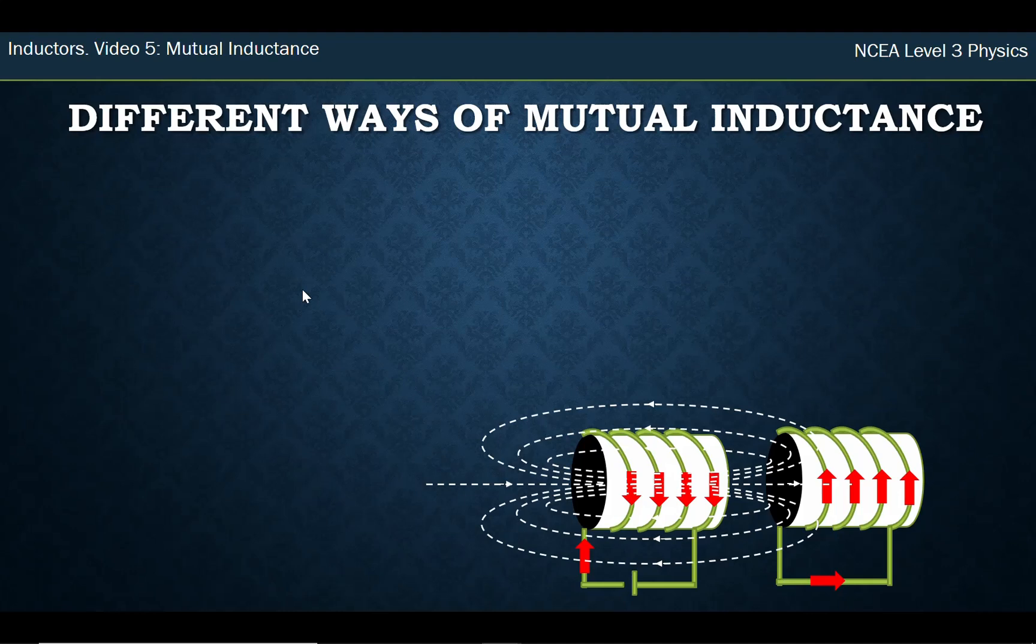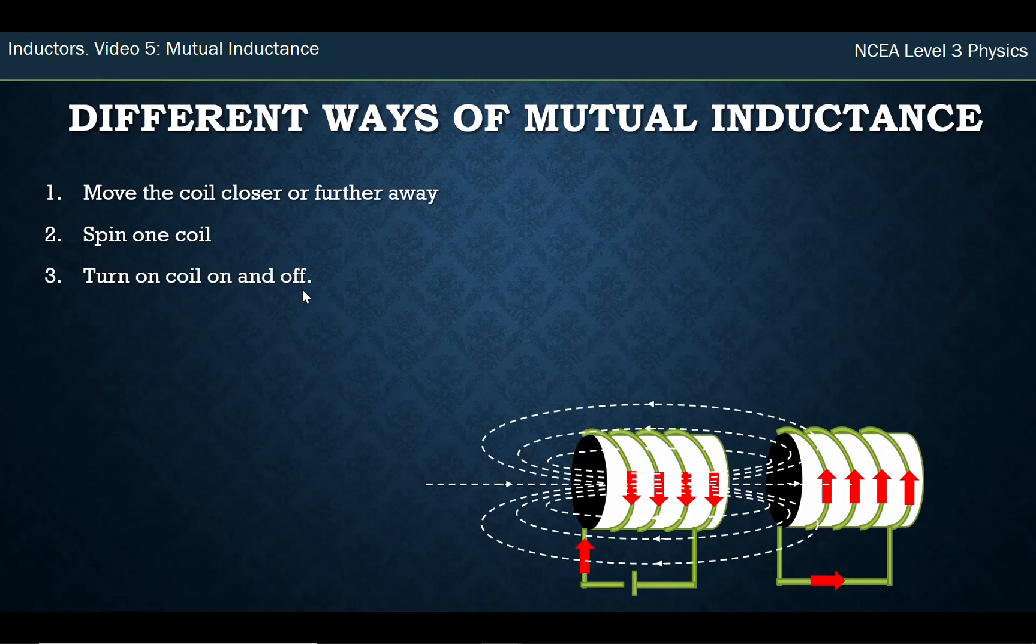There are different ways we could make mutual inductance or get electricity to transfer wirelessly. We could move the coil closer or farther away because that will change the flux. Remember, just think about changing the flux. We could spin one of the coils, or we could turn the coil on and off because that will go from full flux down to zero and back. Or we could reverse the current in the coil, so the magnetic field goes one way, and when we reverse the current, the magnetic field goes the other way.